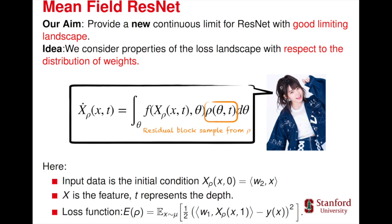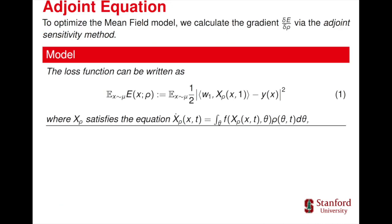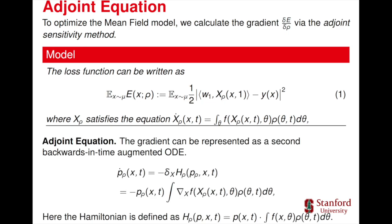To access the gradient of this model, we use the adjoint sensitivity method. The gradient of the feature map can be represented as a second backwards-in-time augmented ODE which is known as the adjoint equation.